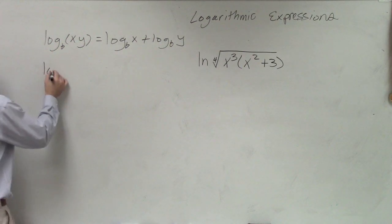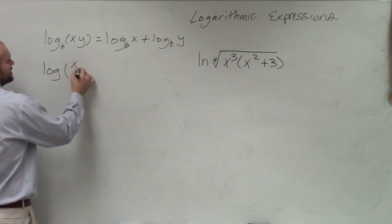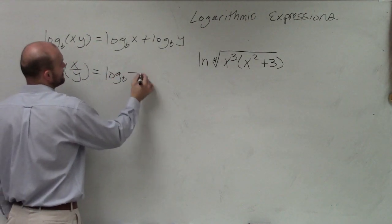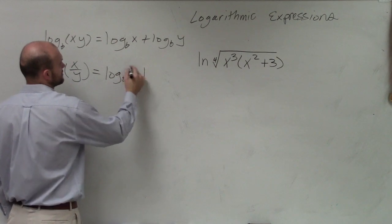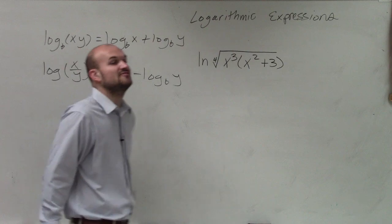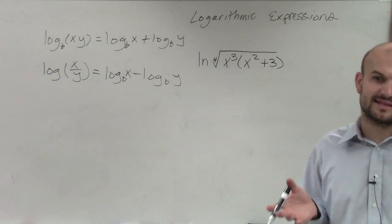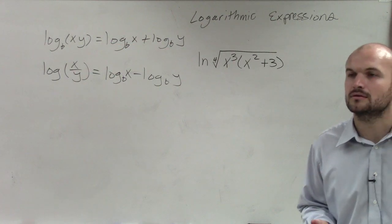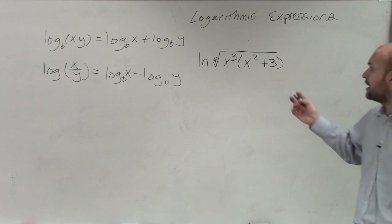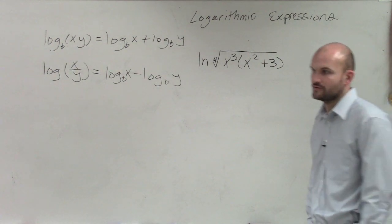If we have the log of division — x divided by y — that equals log base b of x minus log base b of y. So if we have division inside of our logarithm, we can rewrite that as the subtraction of the two different logarithms.